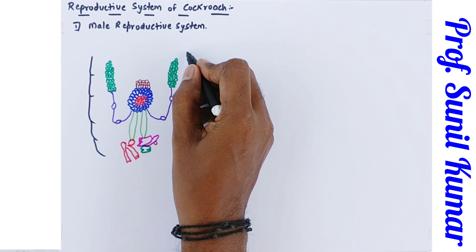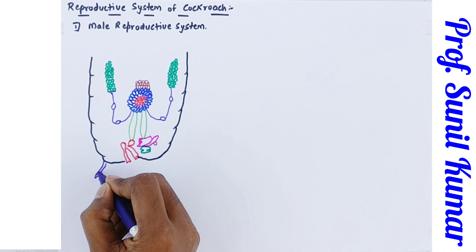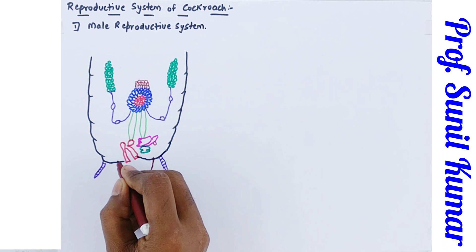We also need to draw the anal ciri, which are responsible for sensing temperature and pressure, and the anal style — because it is the male reproductive system, it must have the style. Now let's start with what the male reproductive system consists of.